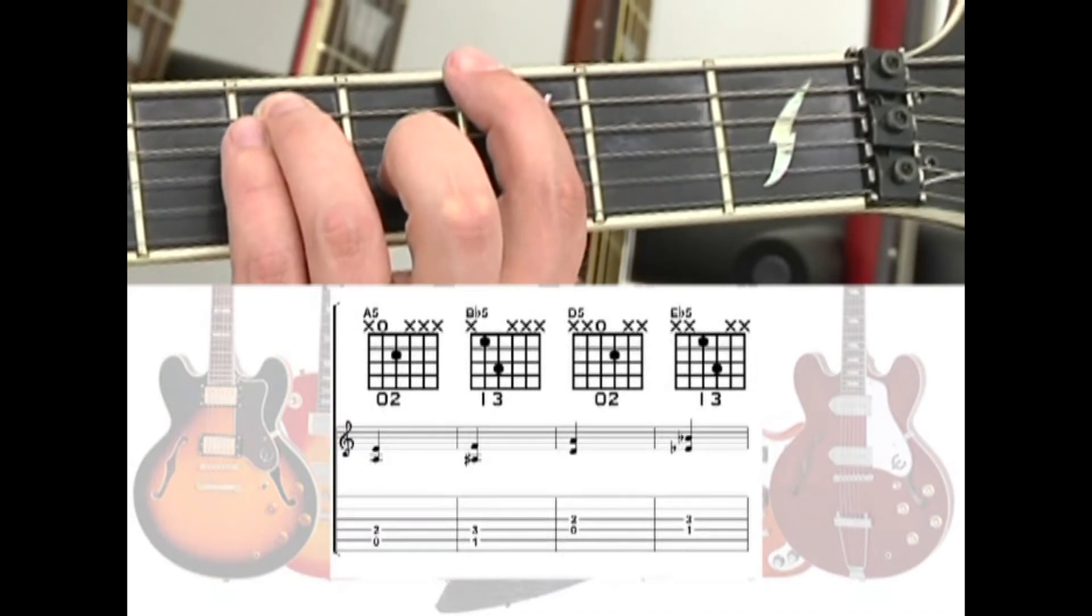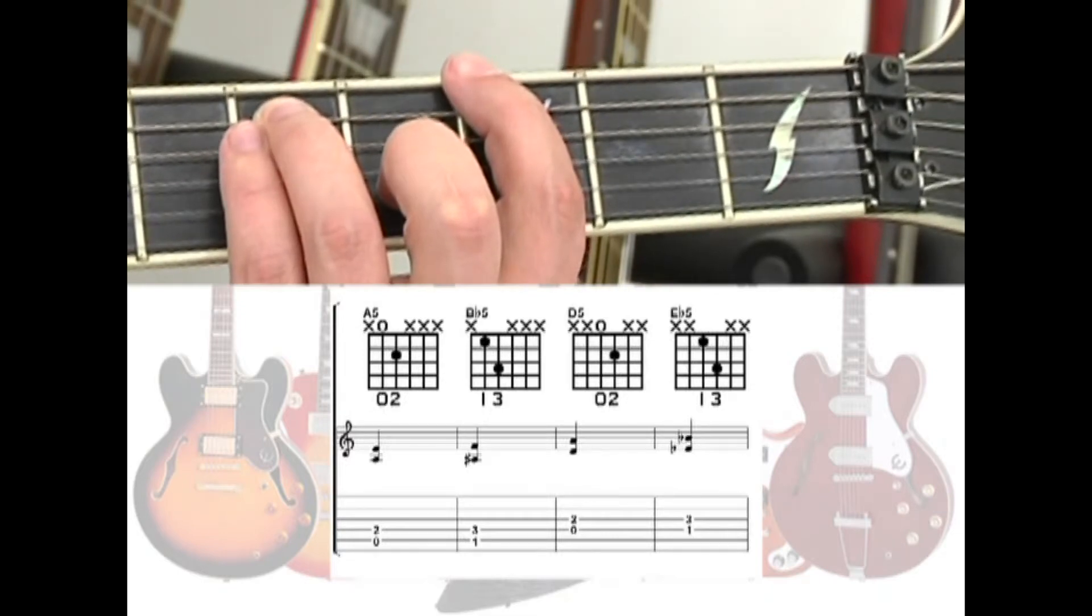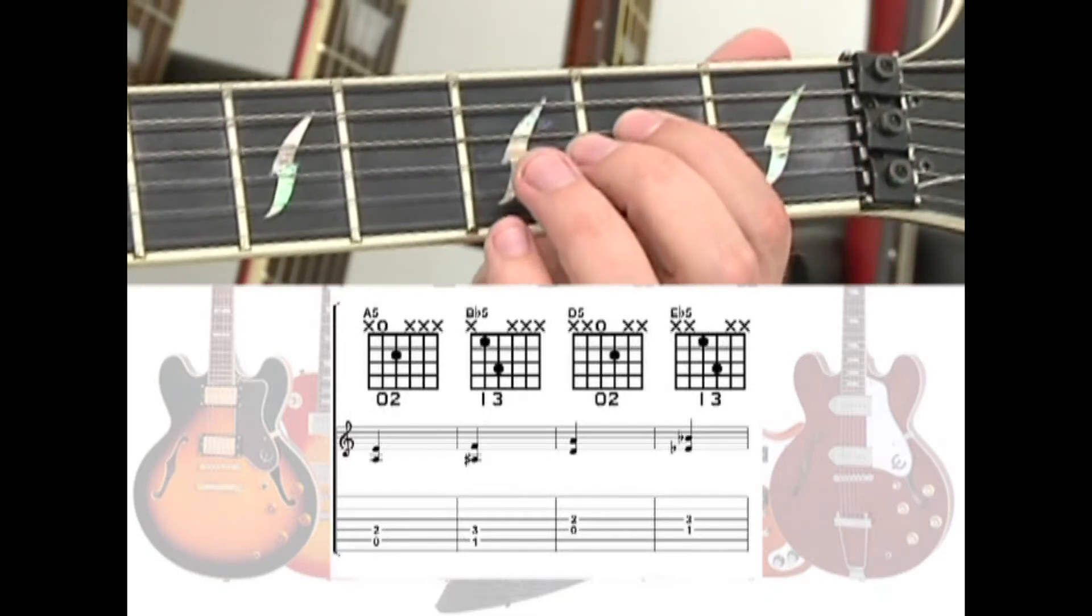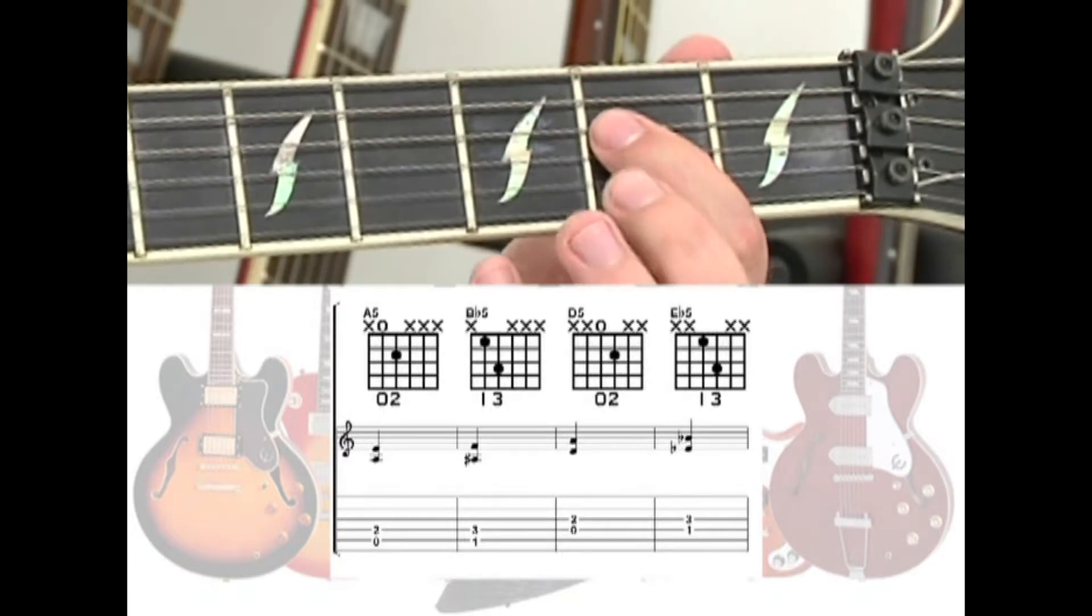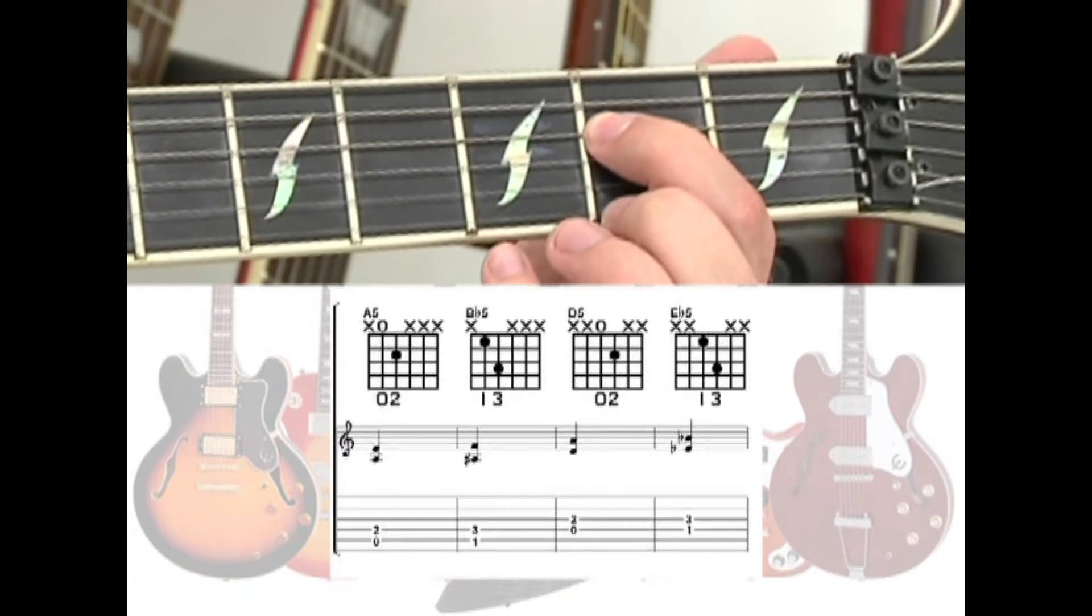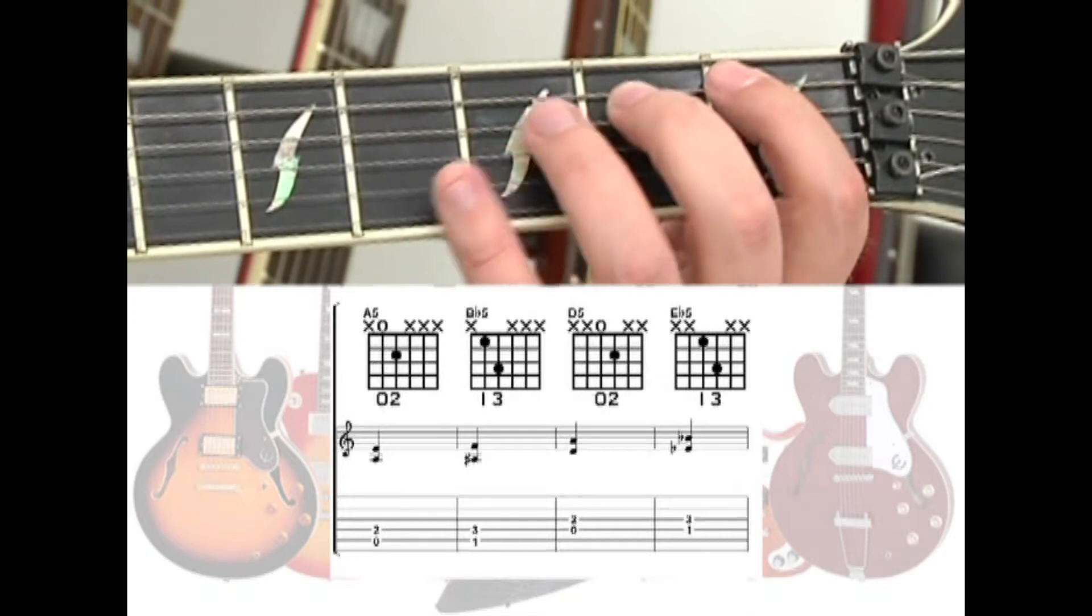You can also move these power chord shapes to different strings. The open A5 is just like an open E5, just played on the 5th and 4th string. Move up one fret and you have Bb5.